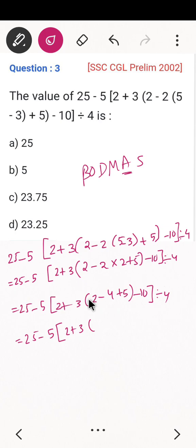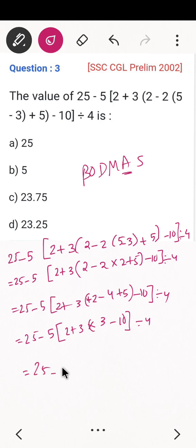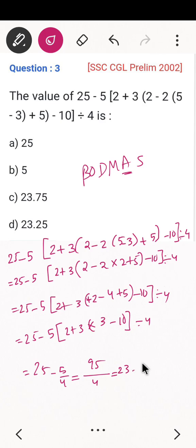Continuing the simplification: 2 + 5 = 7, then 7 − 4 = 3. Then minus 10 divided by 4. Solving this: 10 × 5 = 50 minus 5 = 45, divided by 4. The final answer comes as 10 to 3.75. So the answer is 10 × 3.75.